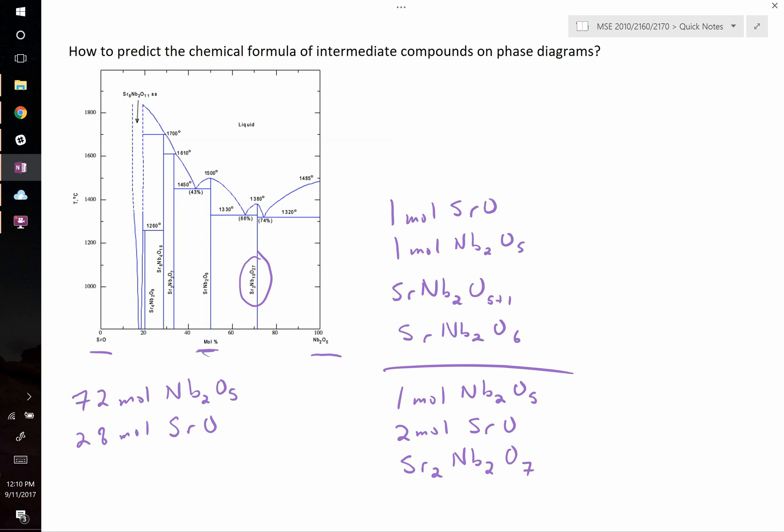When you divide 72 by 28, we find it's about two and a half. Since you can't have fractional numbers, we multiply it all by two to figure out that for every two moles of SrO you must have five moles of Nb2O5, and that's how you get the formula there. When it's plotted in mole percent, these are relatively simple to predict.